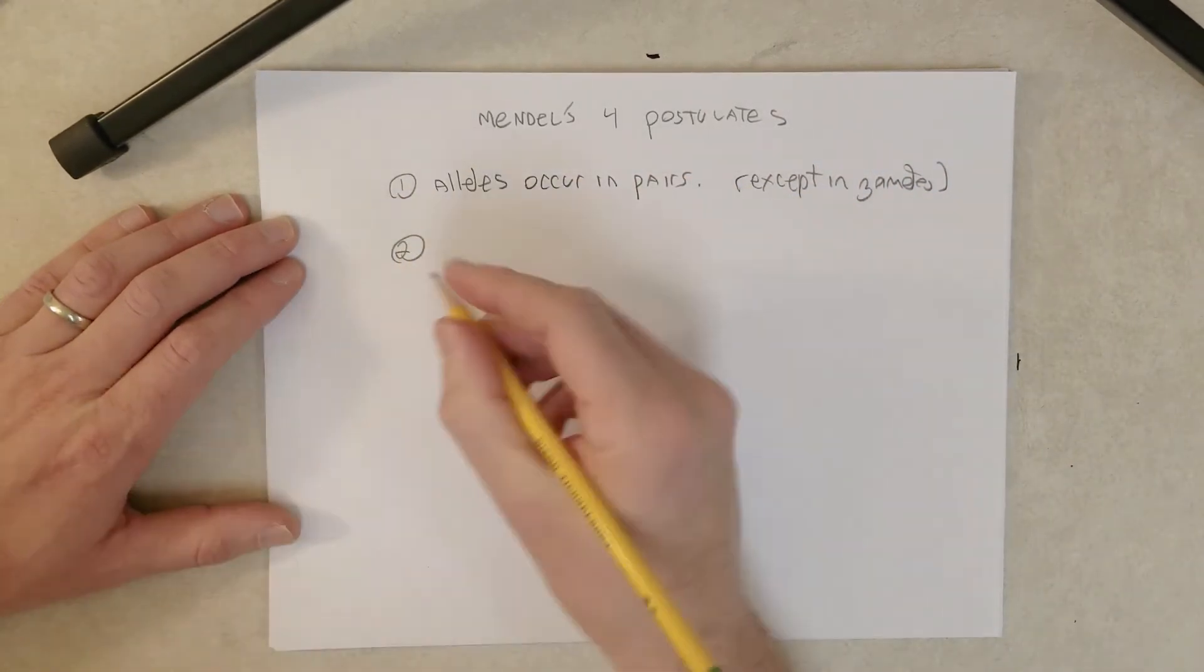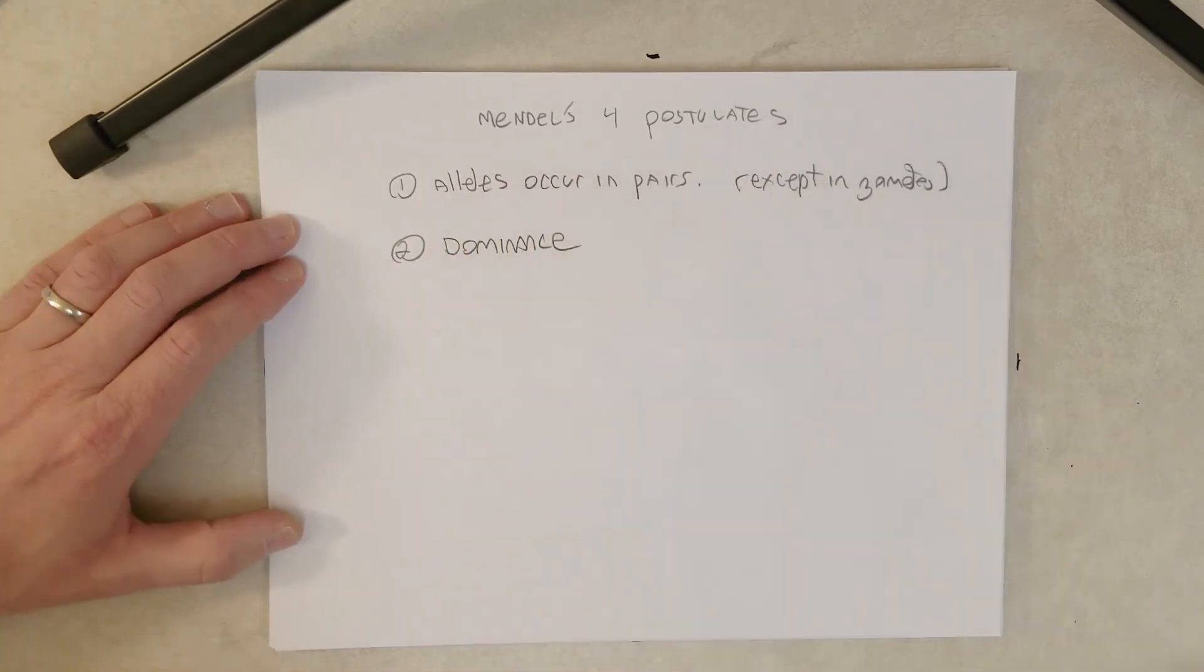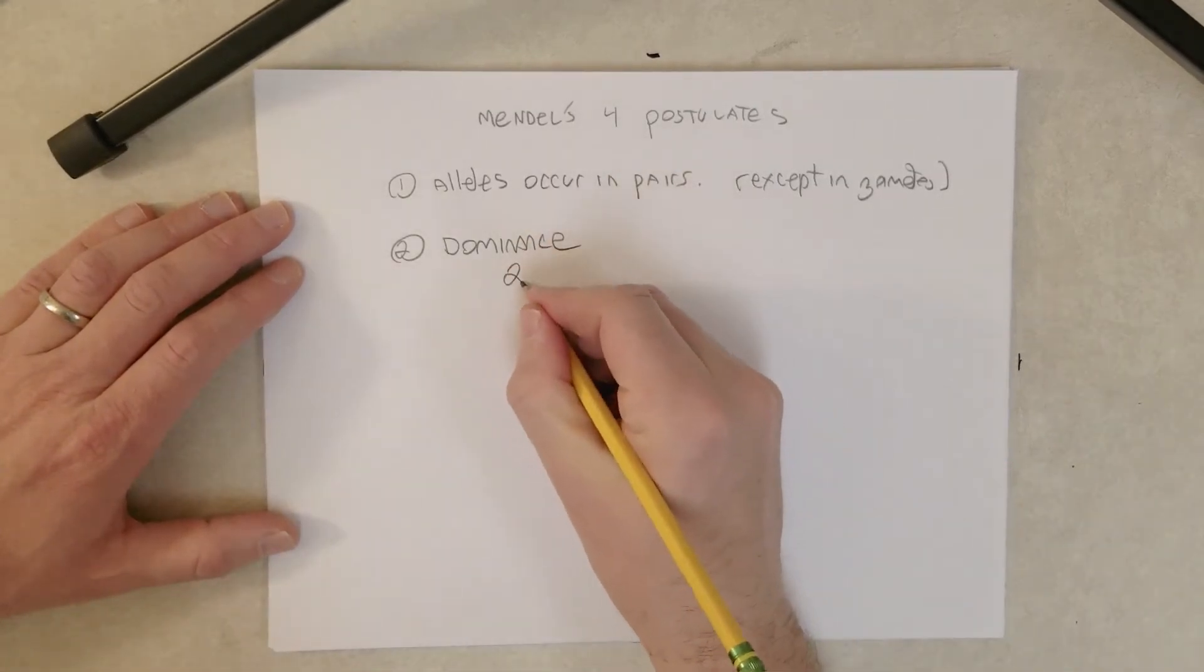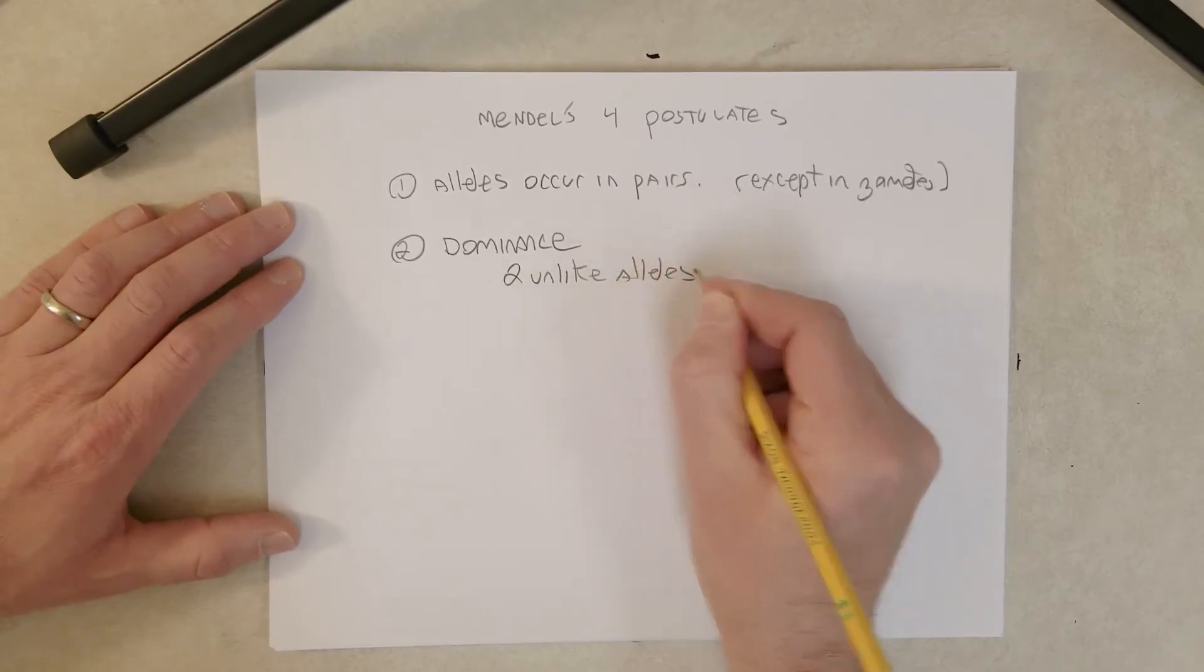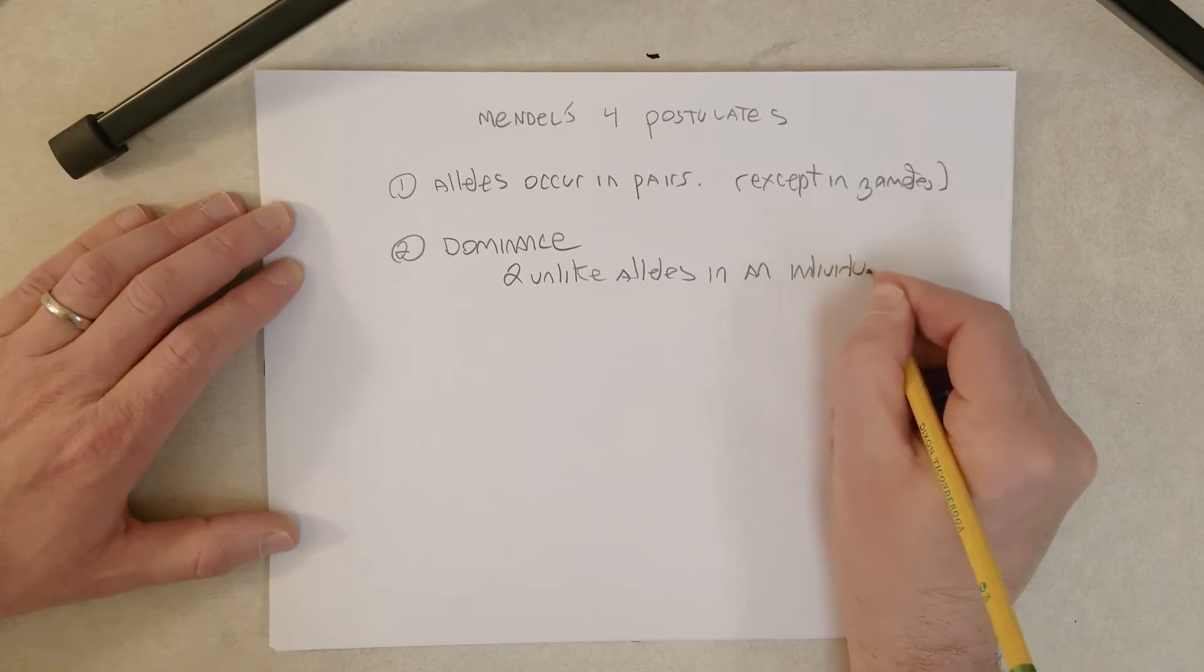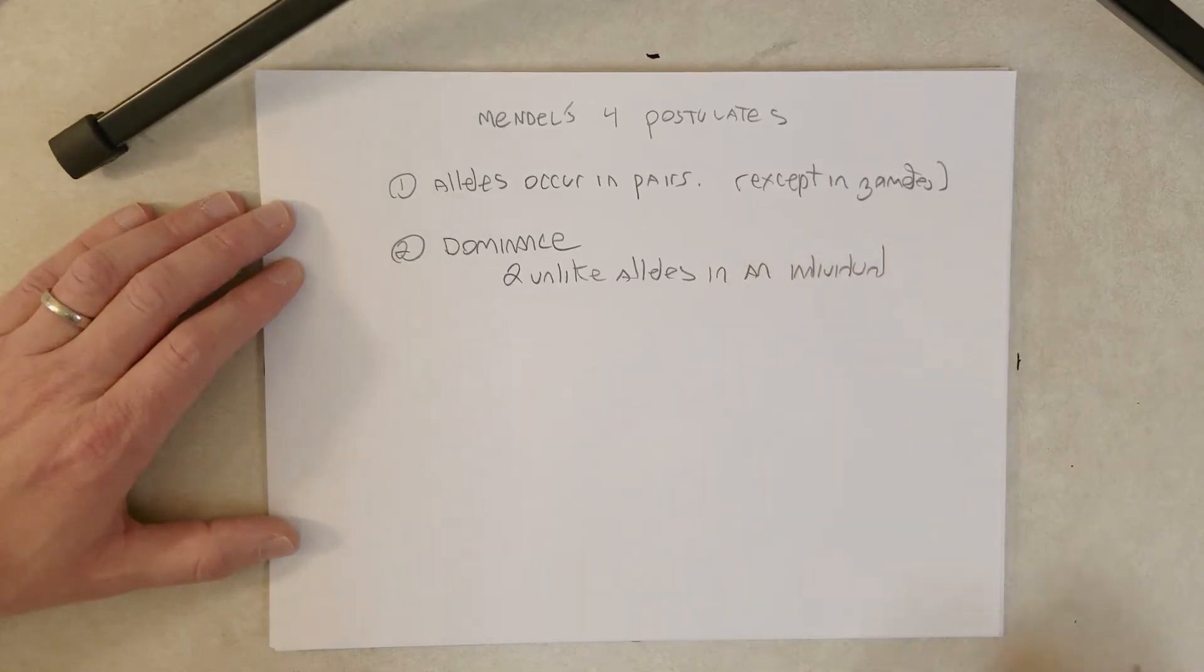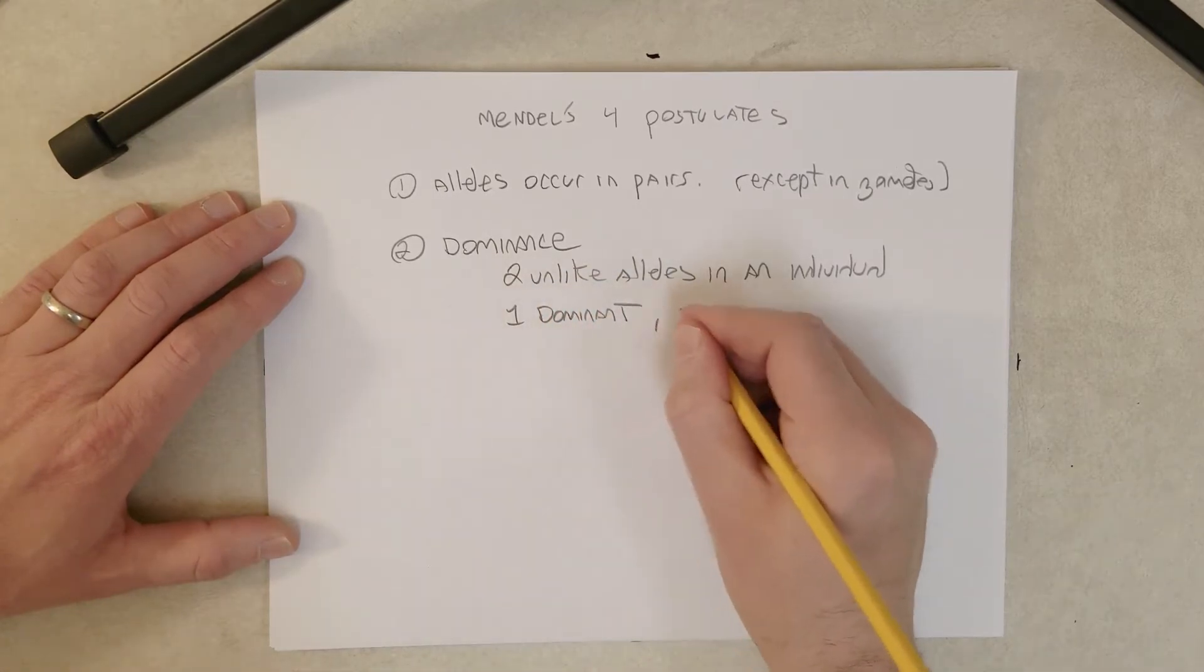So he came up with a postulate on dominance. What dominance, the postulate on dominance says when there are two unlike alleles in an individual, in this case, an individual pea plant, one is dominant over the other and one is recessive.